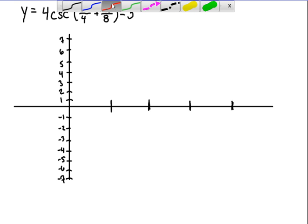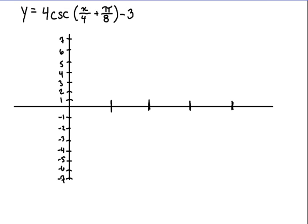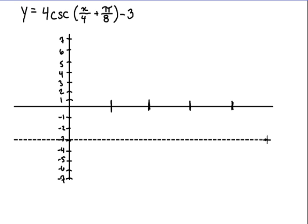To get us started, our minus 3 on the end gives us a new midline down at negative 3. From there, we can see our amplitude is going to be 4, and we're going to have a change in the period.